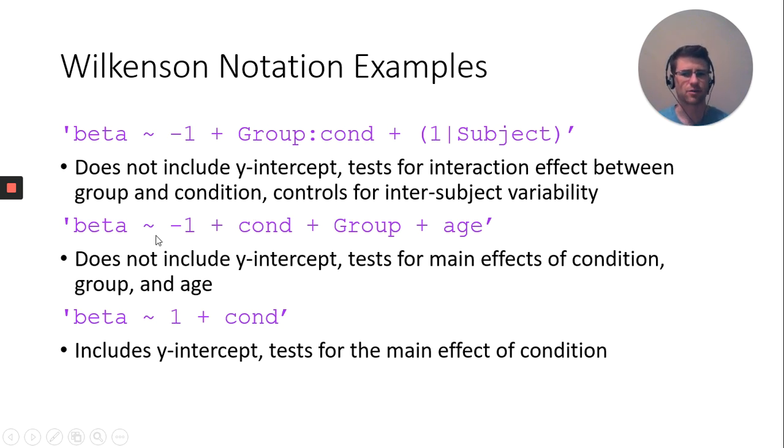Beta squiggly negative one plus condition plus group plus age. This does not include a y-intercept, denoted by the negative one. It tests for the main effects of condition, group, and age.